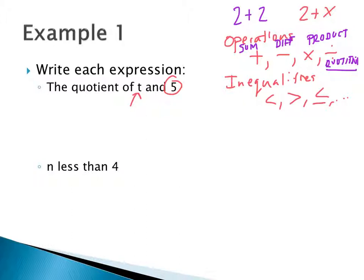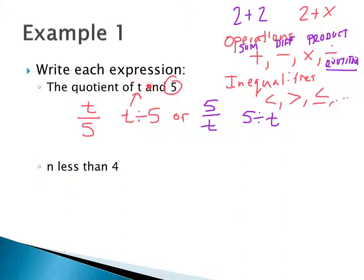The quotient of t and five can be written as t divided by five, or using the division symbol. Usually when we get an expression we take whatever number is labeled first and perform the operation with the second number. So the quotient of t and five is t divided by five.